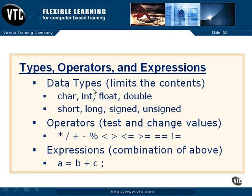Data types actually limit the contents of an item. So if we have a variable, it could be a character — that's C-H-A-R, or char — or it could be an integer, a floating point, or a double precision floating point. A double is just a larger float with greater precision. We'll look at all of these in detail as we go through this section.